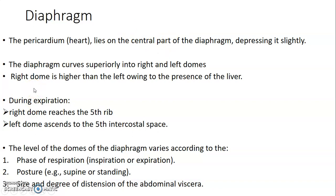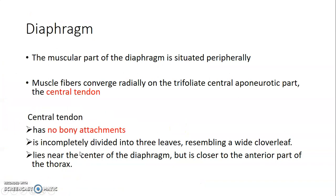During expiration, the dome reaches the fifth rib on the right and the level of the fifth intercostal space on the left. The level of the domes of the diaphragm varies depending on several parameters: the phase of respiration, posture, and the distension and size of the abdominal viscera — all of which determine the level at which the domes sit within the thoracic cavity.